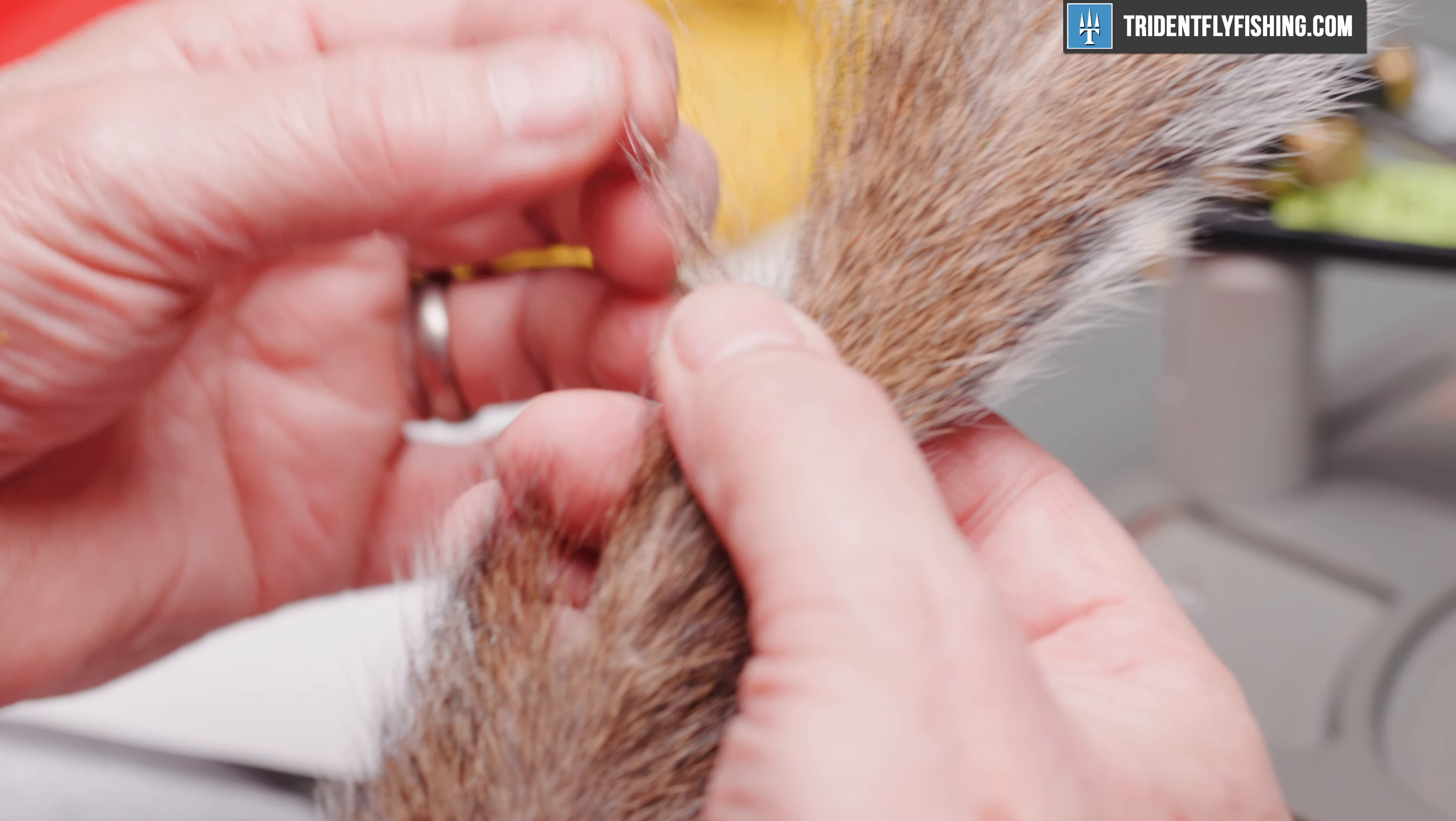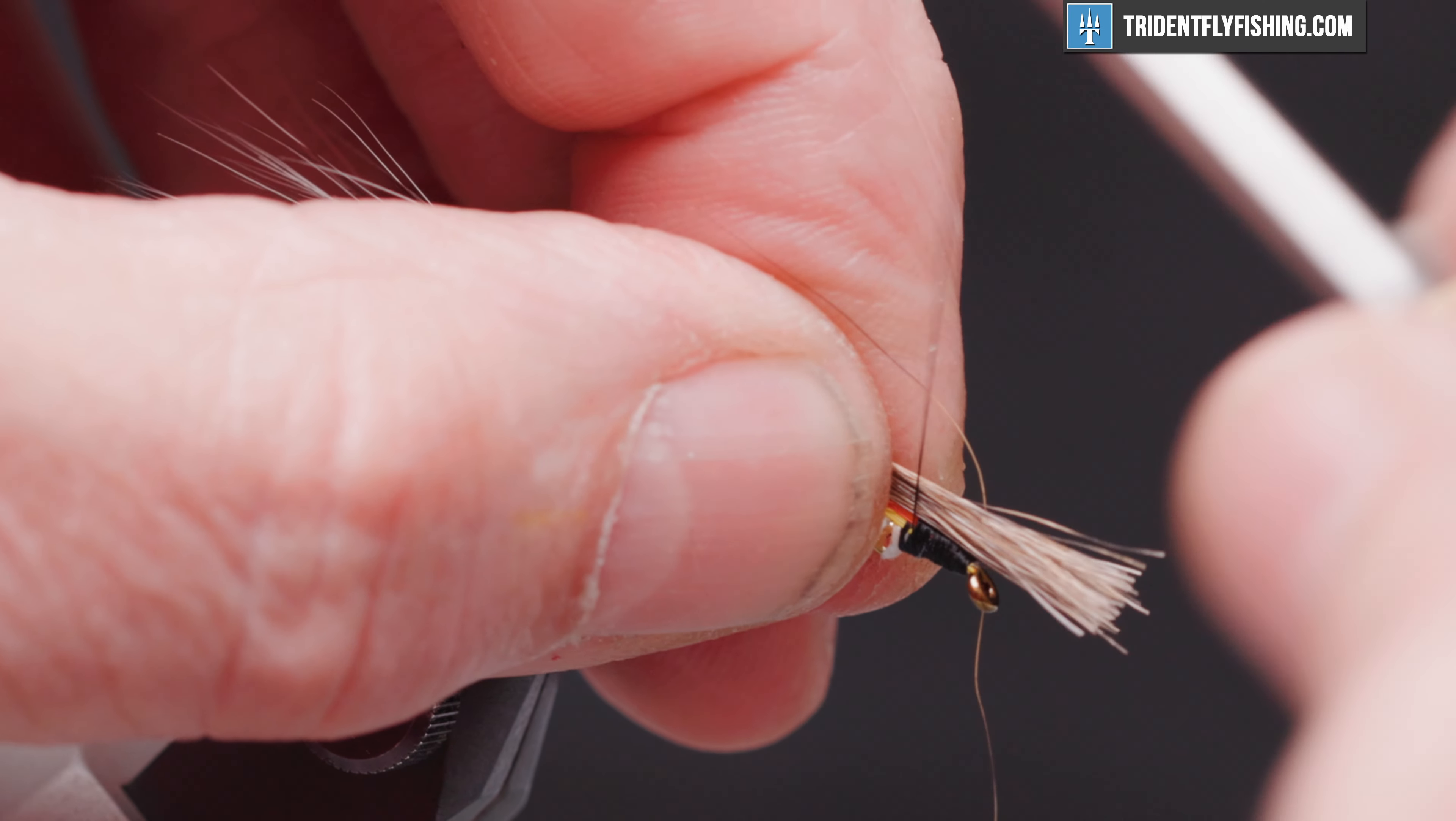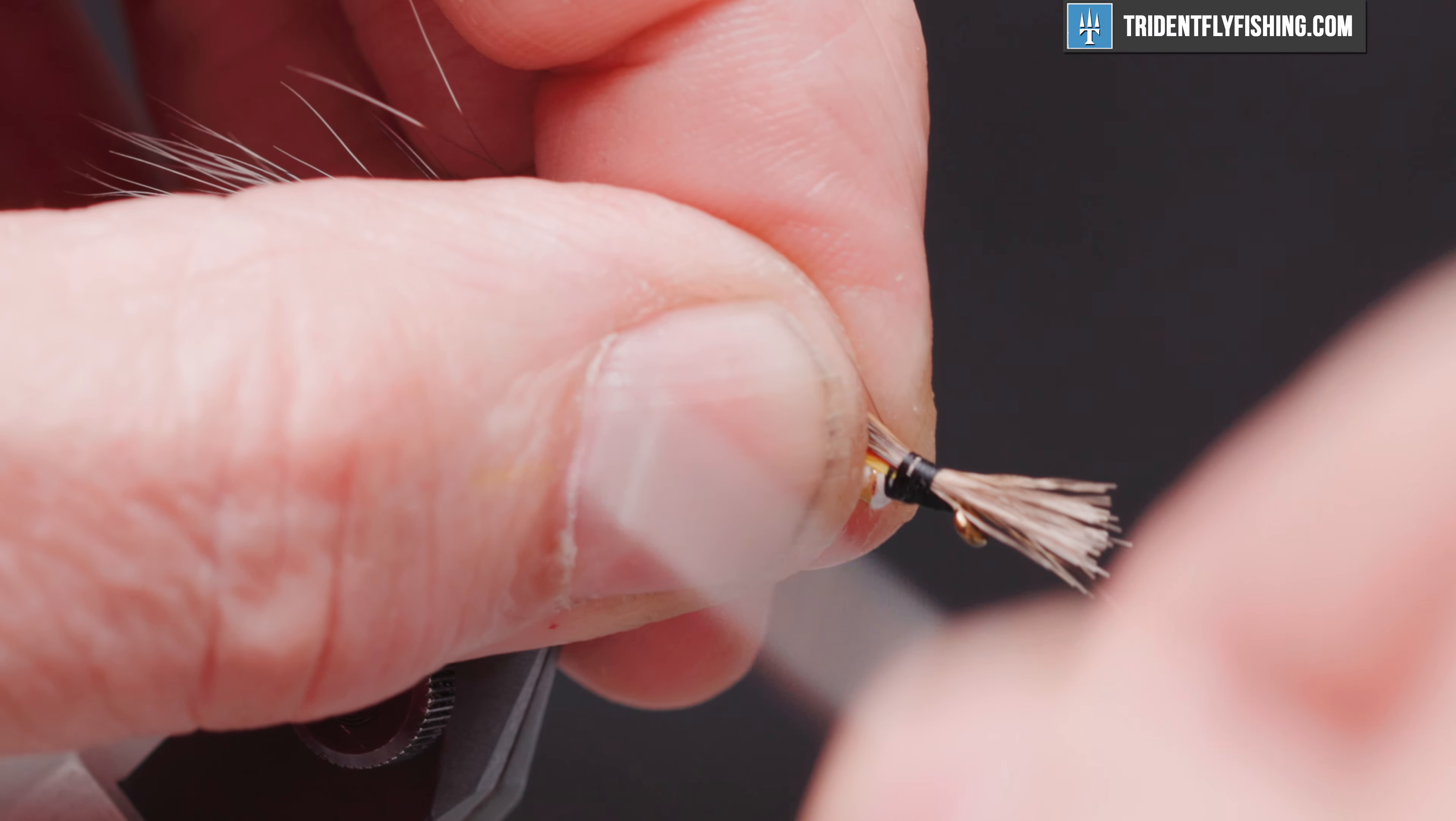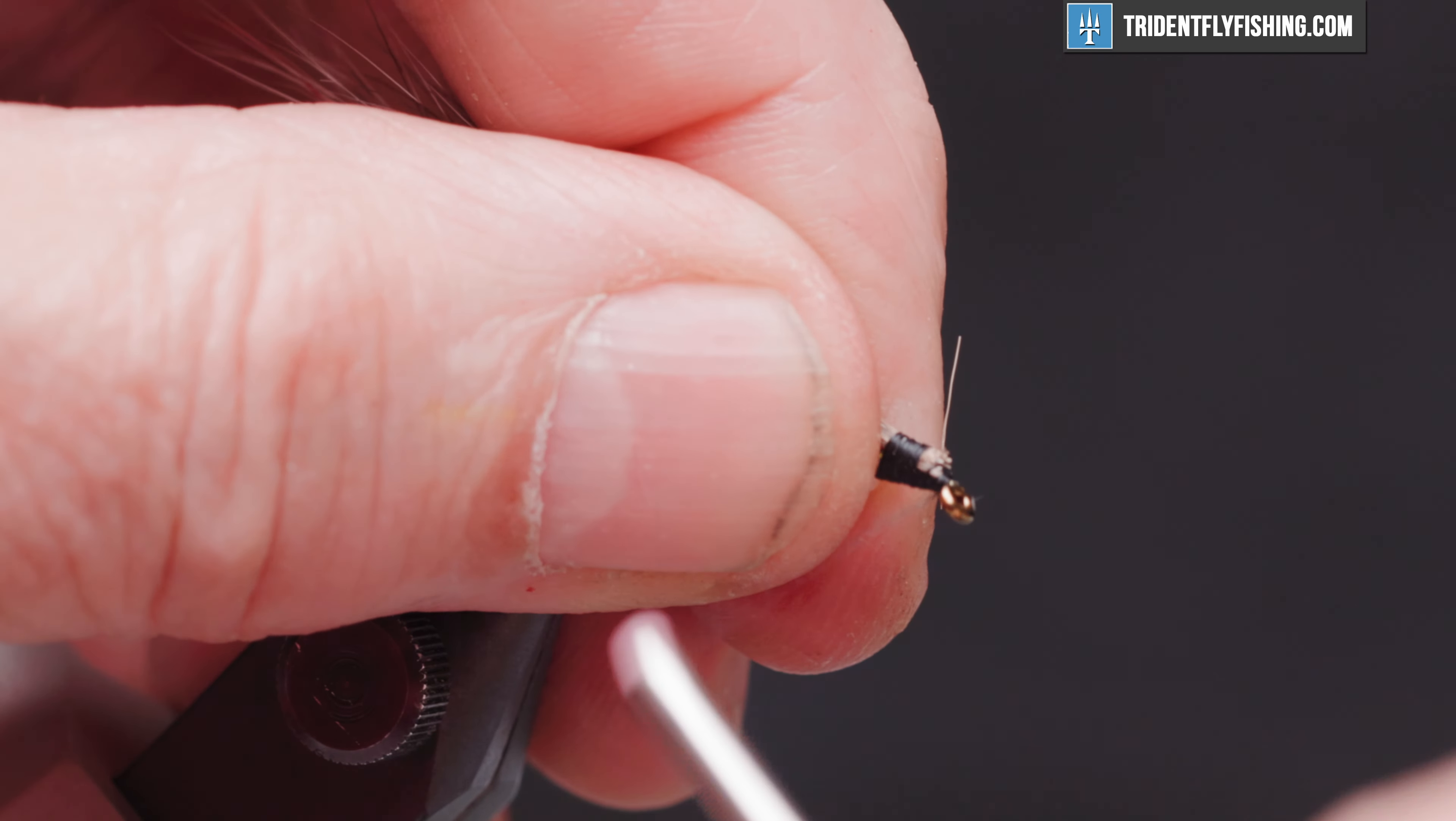And our last material is going to be from a gray squirrel. And we're looking for some of the white tips and some of the tan. Again, sparse is best. And we want this to be the same length as the other wing materials. Tie that in. Tight turns with this squirrel. It's a really slippery material. And we'll cut off our excess.